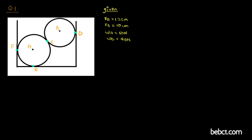Welcome back. In this video we are going to solve a problem from the chapter on equilibrium and equations of equilibrium. The problem involves two balls inside a container. We need to find the reaction forces at points F, E, C, and D. Sphere A has a radius of 12 centimeters, sphere B has a radius of 10 centimeters, the weight of A is 50 Newtons, and the weight of B is 40 Newtons.